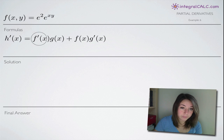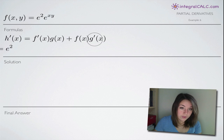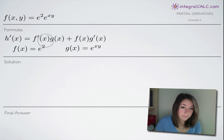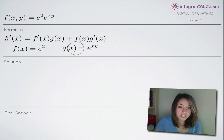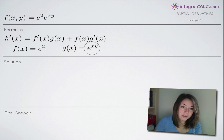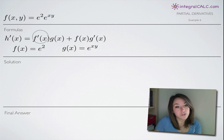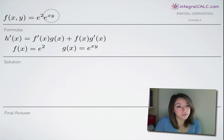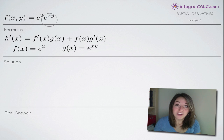I've gone ahead and written out product rule here. The first thing we'll need to do is assign f of x to one of our quantities and g of x to another. It doesn't matter which ones you pick, so I went in order and assigned f of x to e squared and g of x to e to the xy. Now that we've picked our quantities, we can go ahead and start taking our partial derivatives.